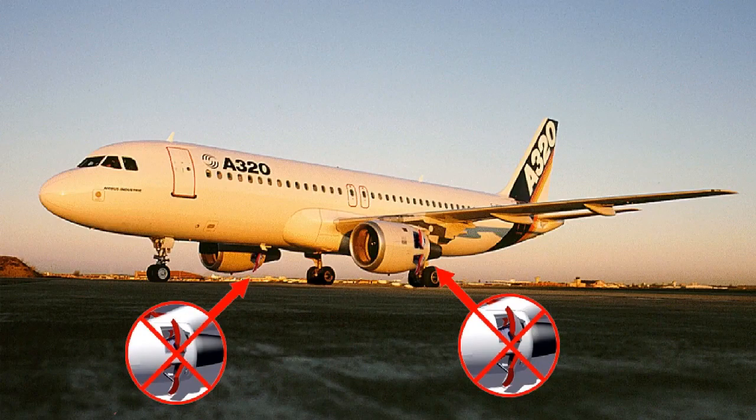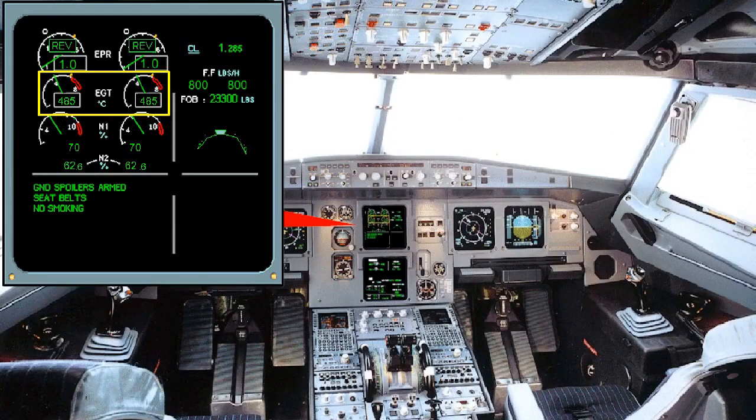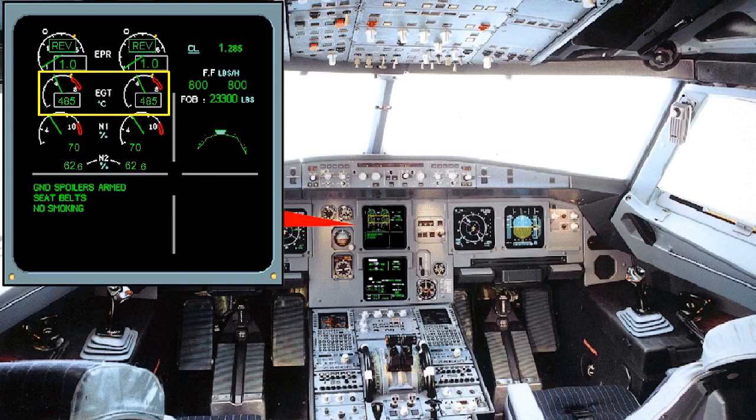Reverse thrust is not normally to be used for ground maneuvering. When the reverse thrust system is in use, engine indications must be closely monitored, in particular the exhaust gas temperature. It should be borne in mind that re-ingestion of the exhaust gases will cause the EGT to increase, perhaps exacerbating a situation where high ambient temperatures are already causing the EGT to be close to its limit.